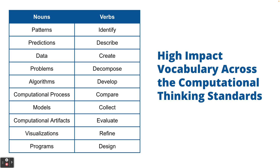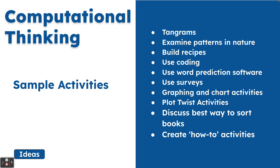The high-impact vocabulary across the computational thinking standards includes patterns, data, algorithms, and computational artifacts. I would add sequencing as an important vocabulary word as well. The verbs include identifying, creating, decompose, evaluate, and design — and we should think about sequencing there too. Sample activities could include tangrams, coding, origami-type activities, graphing charts, creating how-to's, or anything that follows a pattern or step-by-step guide.